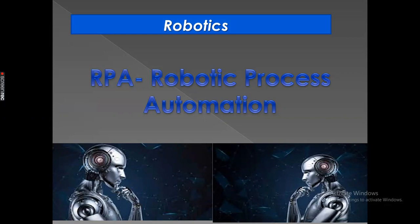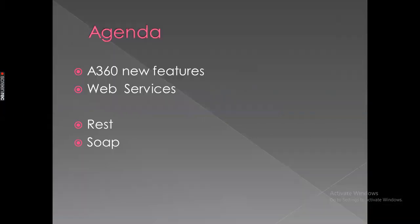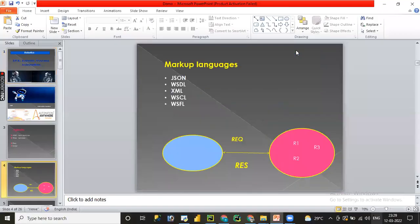In this lesson we are going to learn Automation Anywhere web services concepts. We have already covered what are web services, REST web services, GET method, GET all requests, GET single requests, and the POST method. In this video we will cover the remaining concepts.